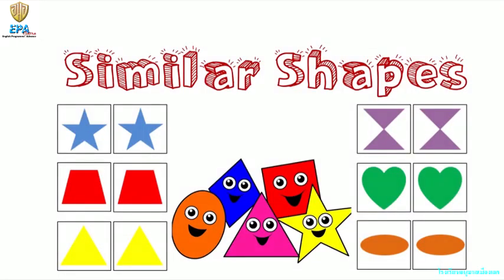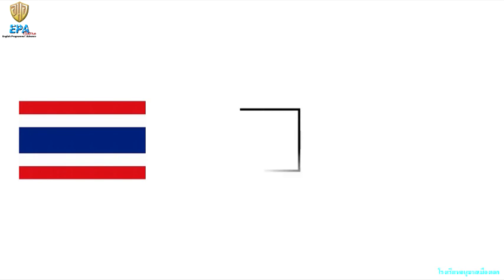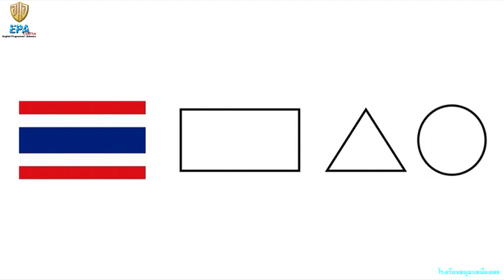Similar Shapes. When we say similar shapes, it means the shapes are the same. This is a tie flag. I want you to look at the shape. The shape of this tie flag is a shape of a rectangle. Now, we have here three different shapes: rectangle, triangle, and a circle. Observe closely the tie flag. What do you think is the shape of the tie flag? Very good! It is rectangle.